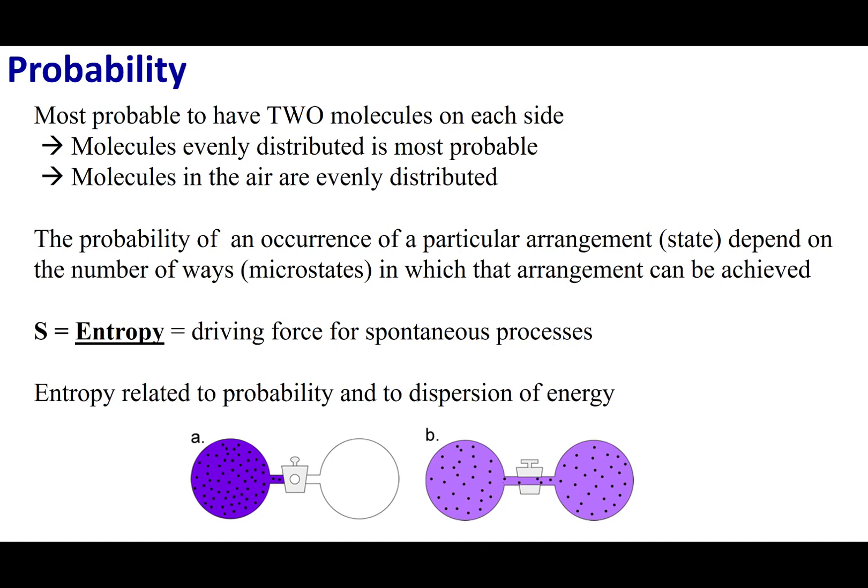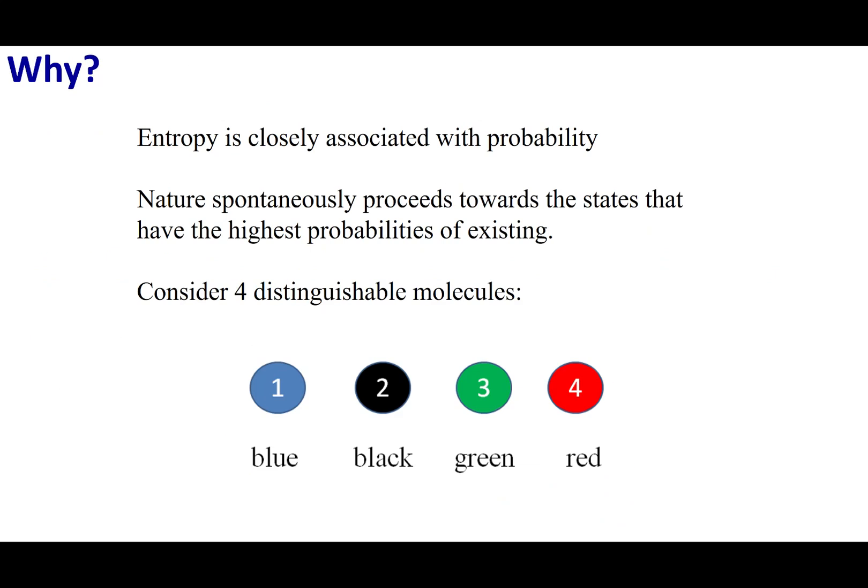This has a lot to do with probability. Let's go ahead and see how entropy is related to probability. What I'm going to talk about are something called microstates and states. Microstates is the way that I can arrange my universe. A state is going to be a particular arrangement and it's going to depend on all the microstates I have. So, let's go ahead and run through an example.